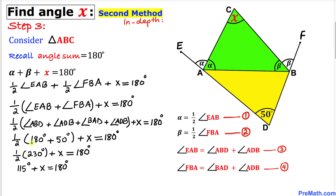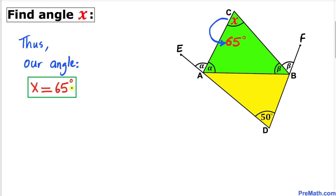180 plus 50 gives 230 degrees. One half times 230 degrees is 115 degrees. Subtracting 115 degrees from both sides, X equals 180 minus 115, which is 65 degrees. So our angle X turns out to be 65 degrees.